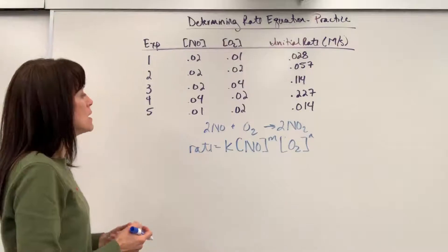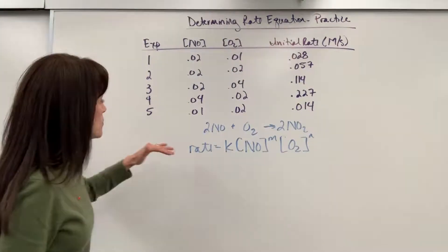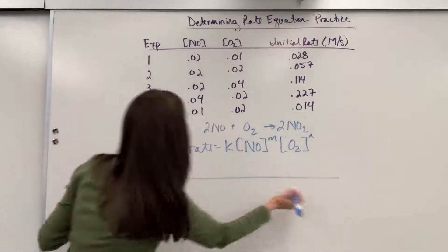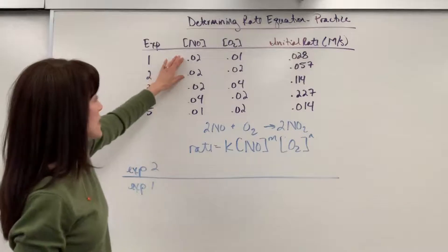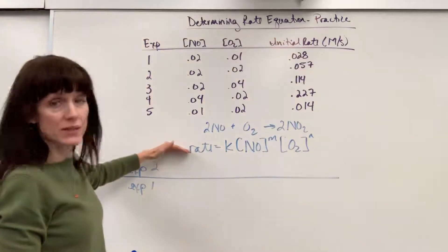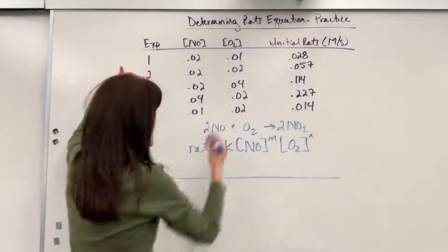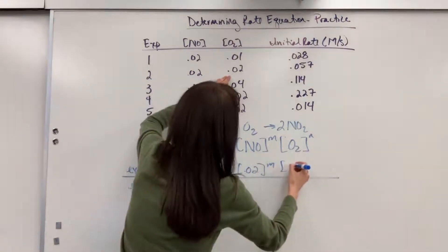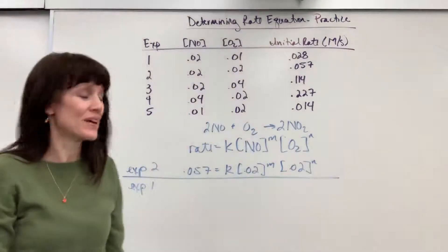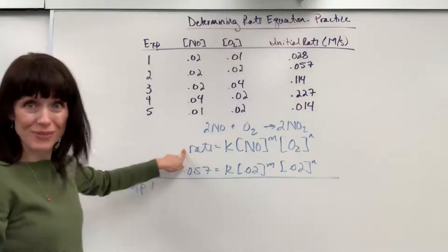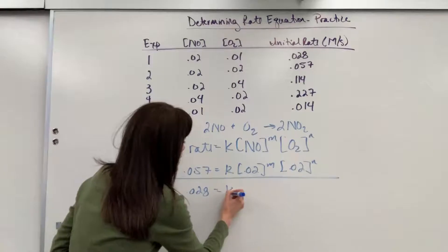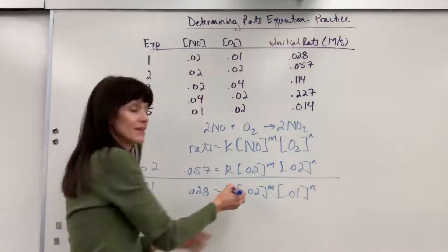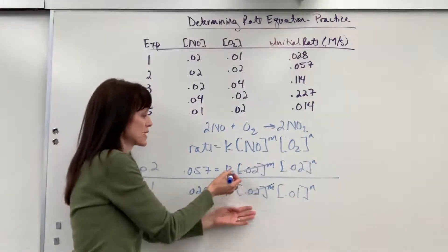We are going to very simply take each of these trials, plug them into the rate law and divide them. So let's do experiment 2 divided by experiment 1. Again, it's because the NO will cancel out and I'm putting trial 2 in the numerator because it has larger numbers. Experiment 2, the rate is 0.057 equals K times the concentration of 0.02 raised to the M times the concentration of 0.02 raised to the N. Now we're going to take experiment 1 and plug experiment 1 into the rate law. So we have a rate of 0.028 equals K times the concentration of 0.02 to the M times the concentration of 0.01 to the N.